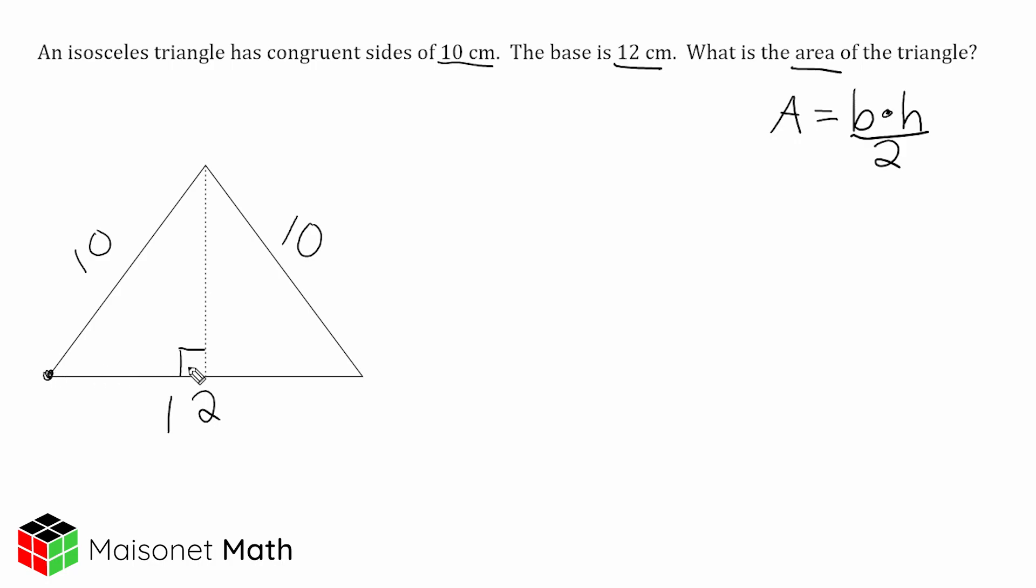So what we need to do is figure out what is the distance from here to here, and then we can use the Pythagorean theorem to figure out what this unknown height is. Because this triangle is divided perfectly into two equal parts, we know that we can take 12 and divide that by 2, which is 6. So the distance from this point to this point is 6 centimeters.